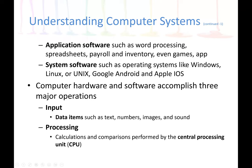We have two types of software. Application software includes word processing, spreadsheets, payroll, inventory, and games — any type of app. Application software is any software that performs a specific task. System software examples include operating systems such as Windows, Linux, and Unix. System software is software that interacts with and manages the computer hardware resources.